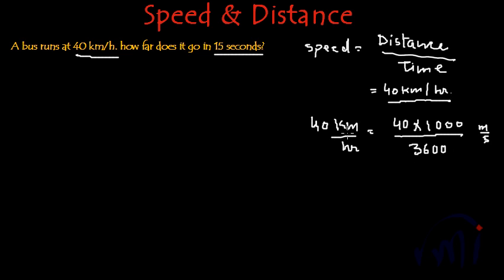We multiplied the numerator by 1000 because 1 kilometer is 1000 meters. Then we replaced the hour by 3600 seconds because 1 hour equals 3600 seconds.